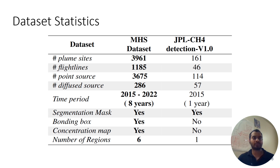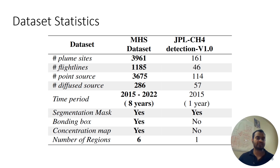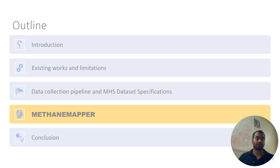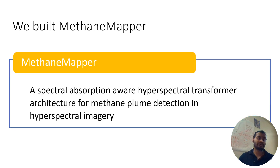These are the statistics of our data. I want to emphasize two particular points. Our dataset constitutes eight years of time period and six different regions. It covers the dry and arid region of Texas and Arizona, semi-arid regions of California, and then dense and wet vegetation regions of Virginia. This is a very common problem in the remote sensing community — if you train a neural network with a specific region in California, it won't work in Arizona. Our Methane Mapper is trained on a very diverse dataset and is very robust to background context.